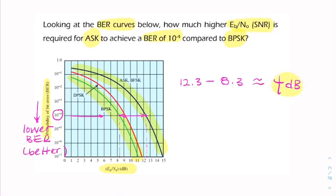So that's how much the signal to noise ratio for ASK needs to improve. So the question is how much higher SNR is required for ASK to have the same performance as BPSK. So clearly here BPSK is performing better than ASK.